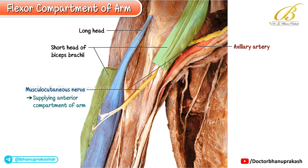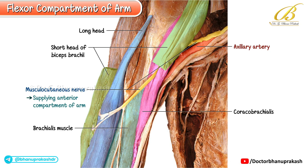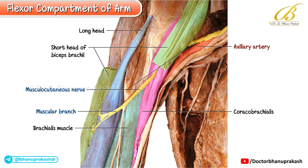Medial and deep to the biceps brachii, we can observe the brachialis muscle. Notice how the musculocutaneous nerve pierces the coracobrachialis muscle, giving off a muscular branch that supplies the biceps brachii, particularly its long head. It then continues down as the lateral cutaneous nerve of the forearm.